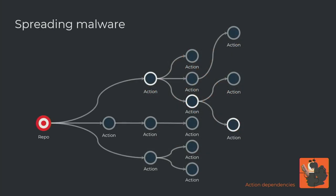Let's see the same graph differently. Here we want to target the repository on the left. If we have a weak link in the chain - some action using another action which uses another action created by someone random on the internet who probably didn't make much effort to secure it - we can maybe compromise it. By compromising that action, potentially we can climb up the tree, infect all the actions dependent on it, and reach our target. The initial infection of the weakest link can be done using one of the initial attack vectors we talked about earlier.